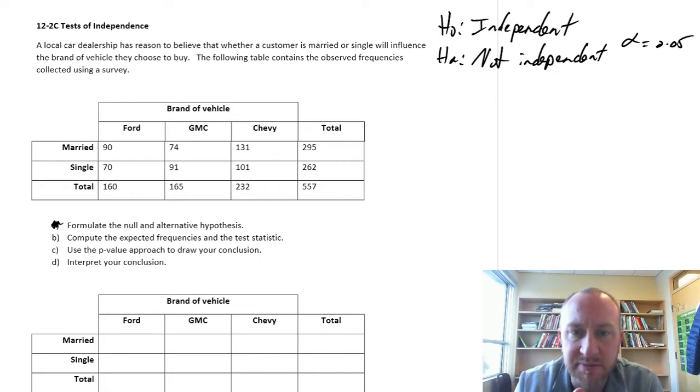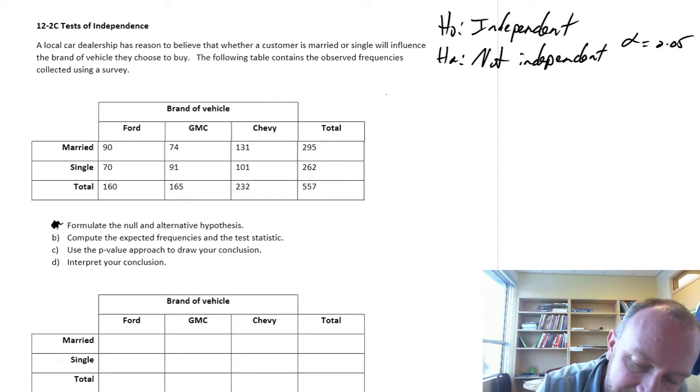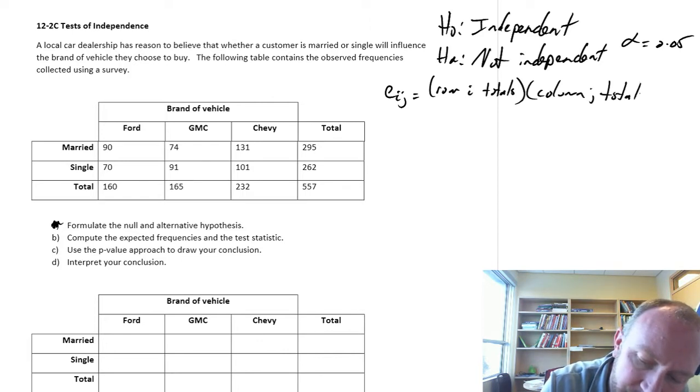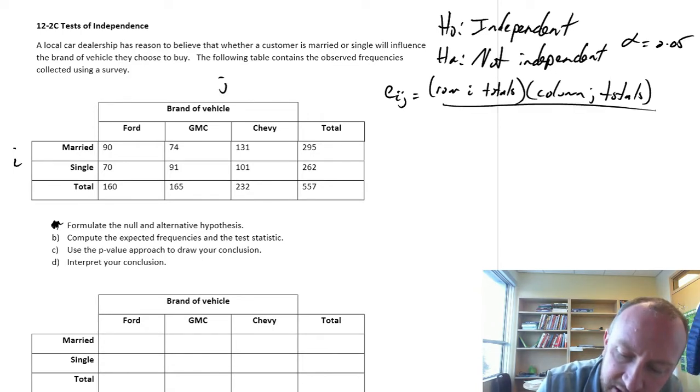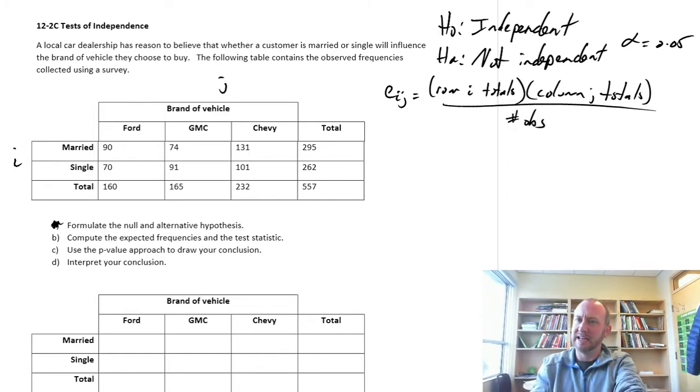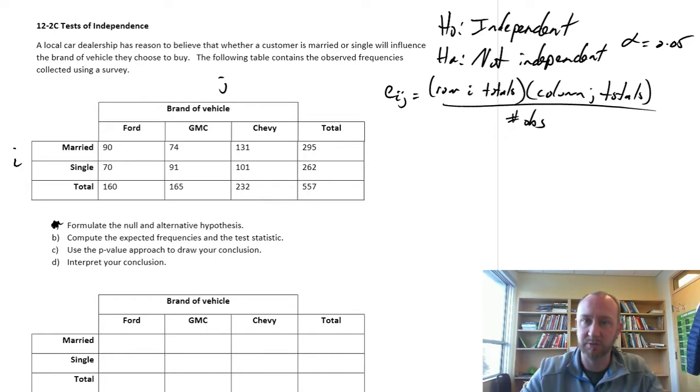Part B, compute all of our expected frequencies and the test statistic. So again, we are working up to, first we need these expected frequencies, which are the row totals times the column totals. So here I'm calling my rows I, and these are J, divided by our total number of observations. So again, I don't know if I need to explain this formula every time we use it.